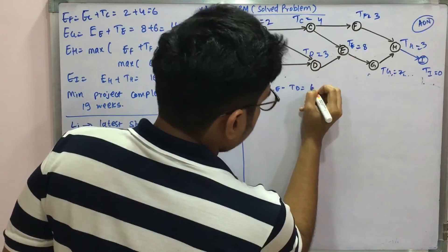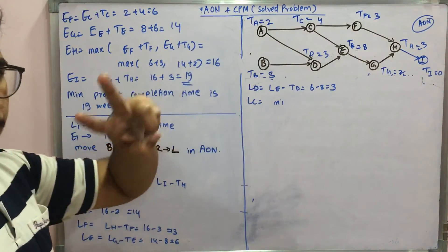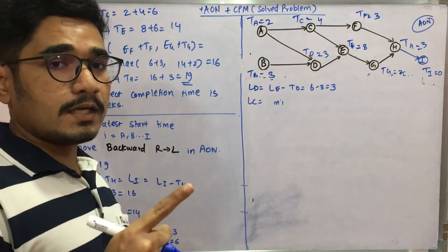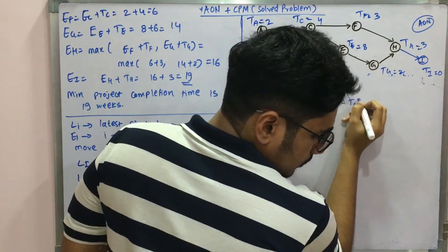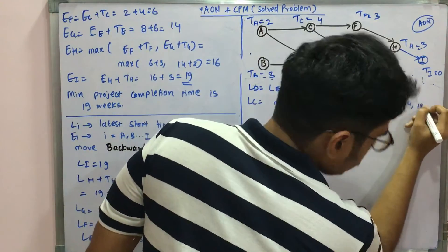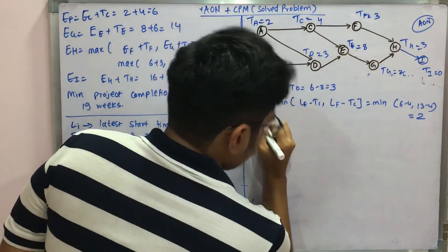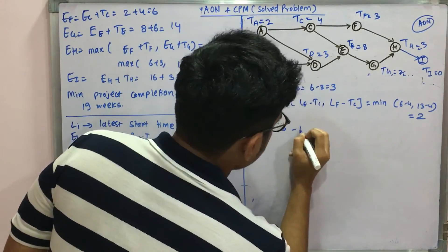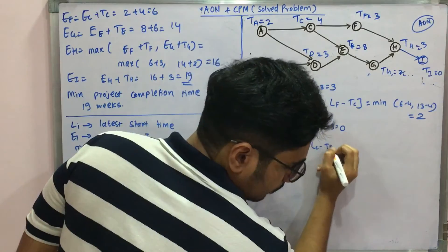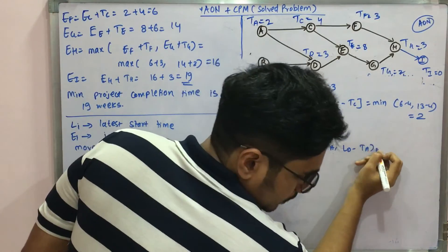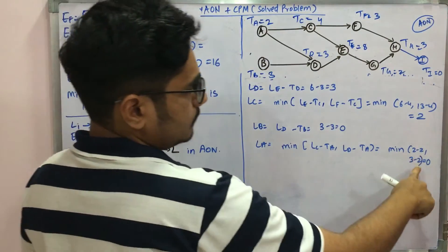Continuing, LD = LE − TD = 6 − 3 = 3. For LC, which has two successors, you take the minimum: min(LE − TC, LF − TC) = min(6 − 4, 13 − 4) = min(2, 9) = 2. LB = LD − TB = 3 − 3 = 0. For LA, with two successor paths: min(LC − TA, LD − TA) = min(2 − 2, 3 − 2) = min(0, 1) = 0.